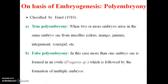On the basis of embryo genesis, there are two categories: true polyembryony, where 2 or more embryos arise from the same embryo sac — examples include mango; and false polyembryony, where more than one embryo arises from distinct ovules for multiple embryo formation, with example being Phaseolus area.